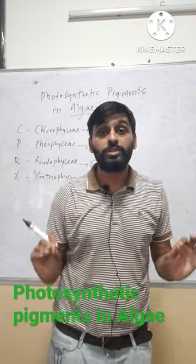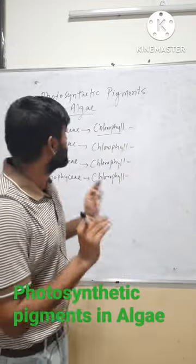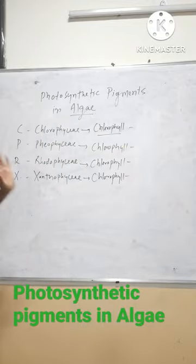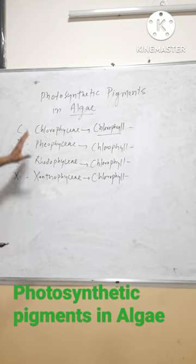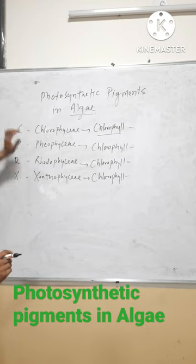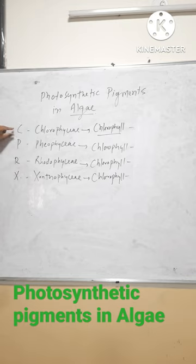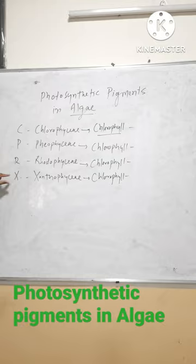Which type of photosynthetic pigments are present in algae? In different groups of algae — first I am writing different groups of algae in alphabetical order: Chlorophyceae, Phaeophyceae, Rhodophyceae, Xanthophyceae — C comes before P, P comes before R, R comes before X.